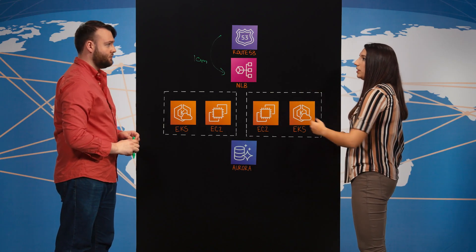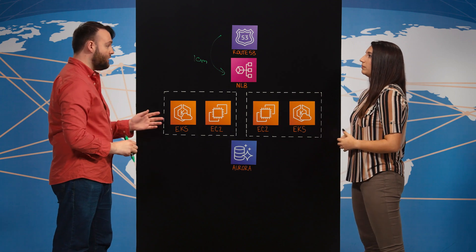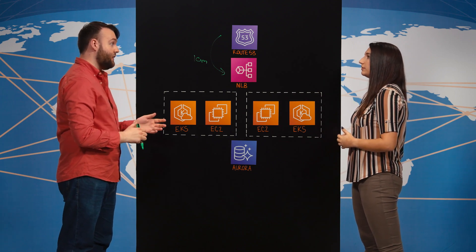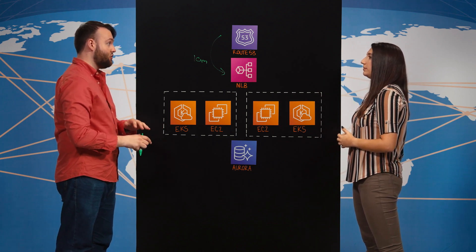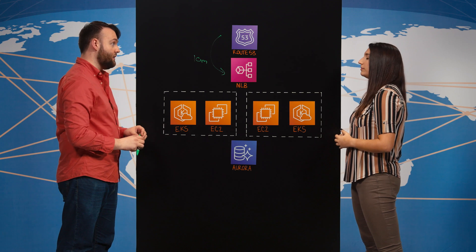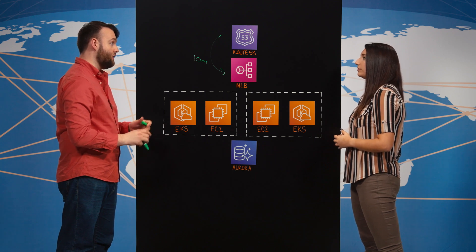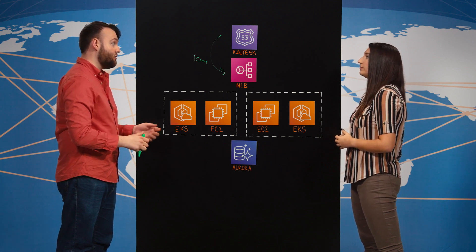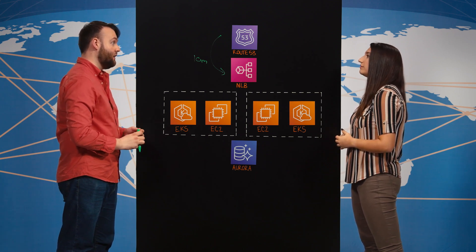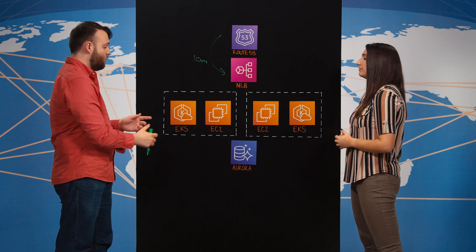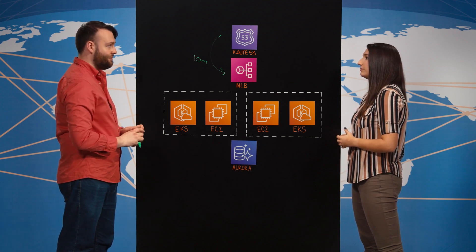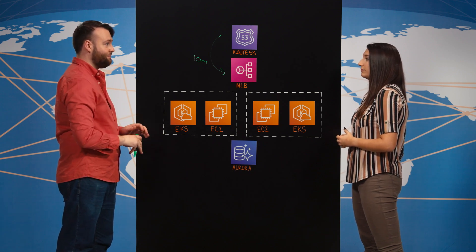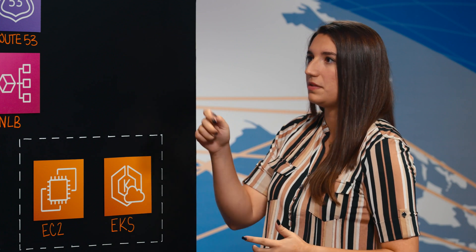Okay so networking is already covered. What about the compute layer? Yeah, so we use EKS. The benefit of EKS is that we can stripe our workloads across different failure domains — across different instances or across different instance types, as well as across different AZs. So networking: checked. Compute layer: checked.